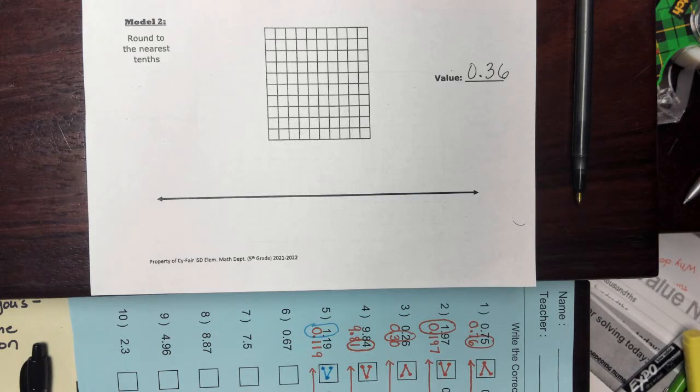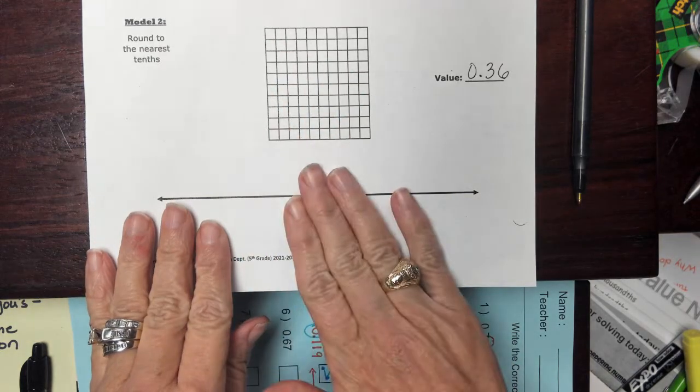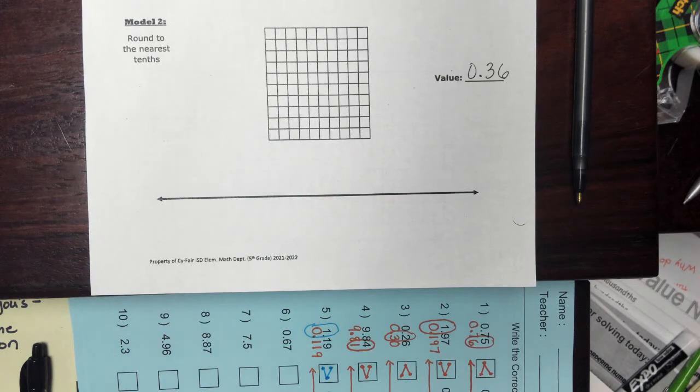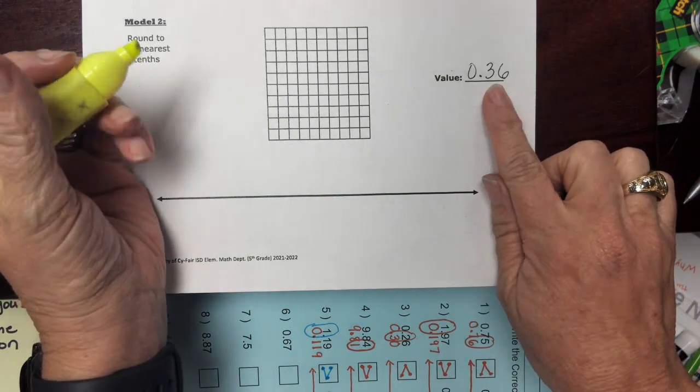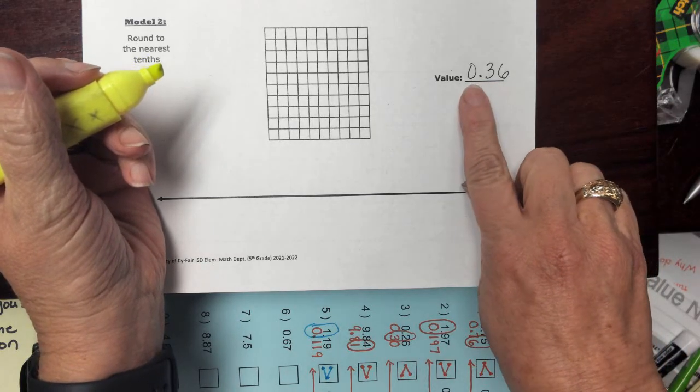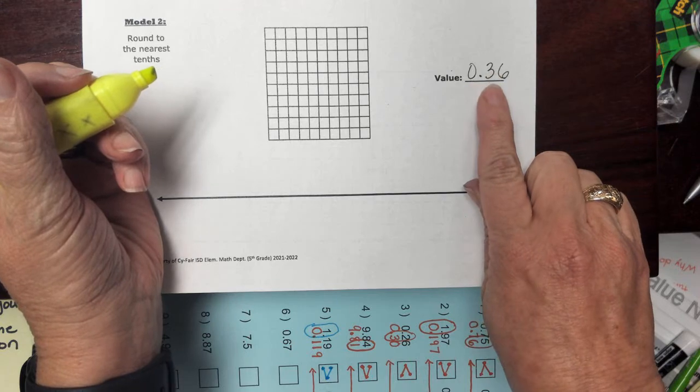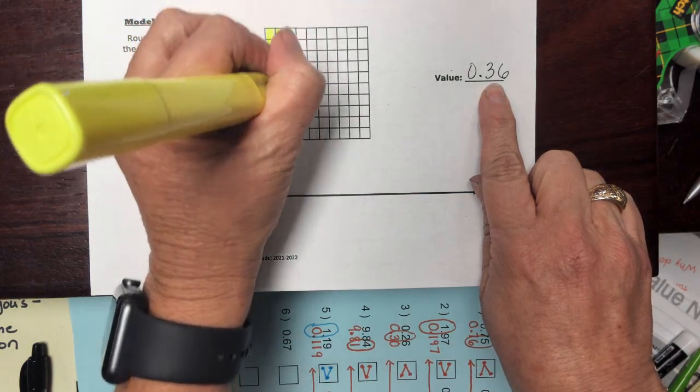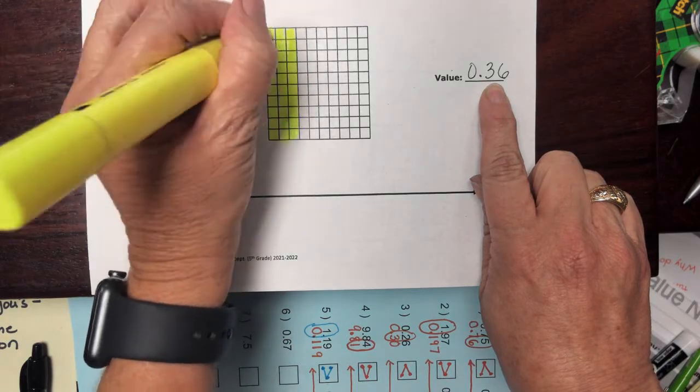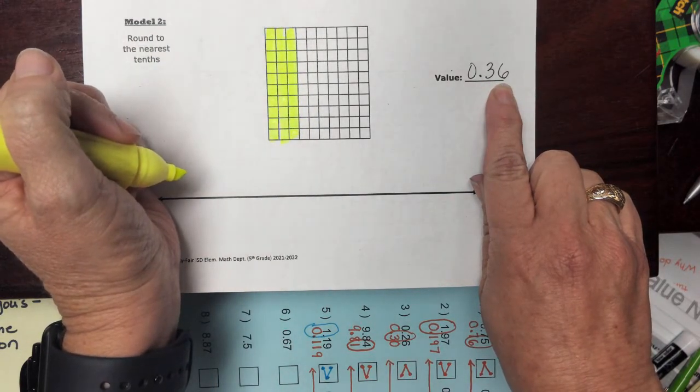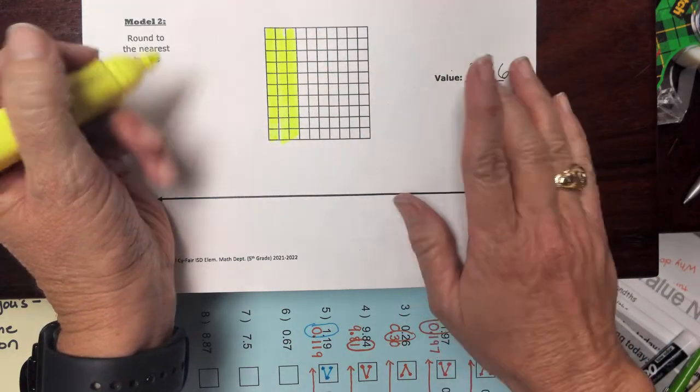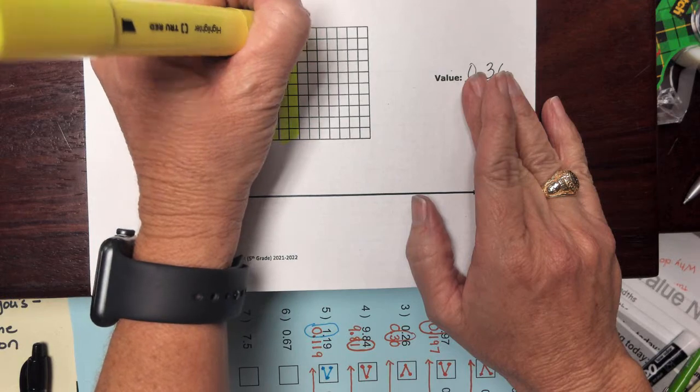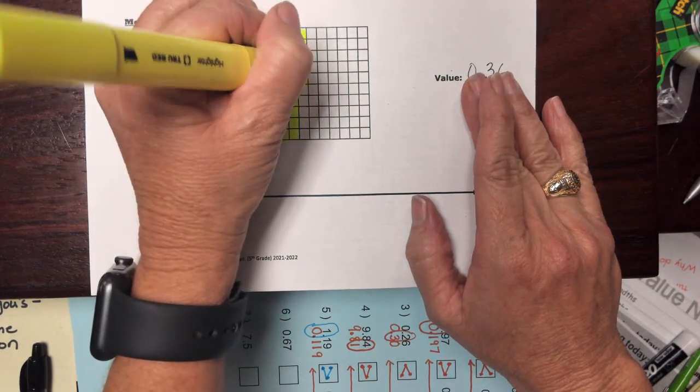Thinking about what we did yesterday when we were rounding to the nearest whole number, and today we're rounding to the nearest tenth, we want to think about our model. I'm going to shade in 36 hundredths. So when I look at each place value, I don't have a whole. I move over to the tenths place and I'm going to highlight three tenths. One, two, three. And I move over to the hundredths place, and that means that I'm going to shade in six additional hundredths. One, two, three, four, five, six.